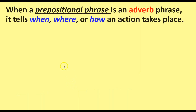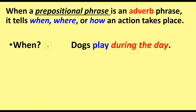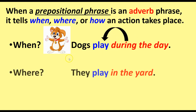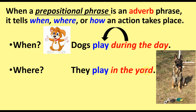When acting as an adverb, a prepositional phrase will specifically give us information about when, where, or how an action takes place. For example — when: 'Dogs play during the day.' Play is the verb, and during the day tells us when the dogs play. Where: 'They play in the yard.' In the yard is our prepositional phrase, modifying the verb play and telling us where they play.